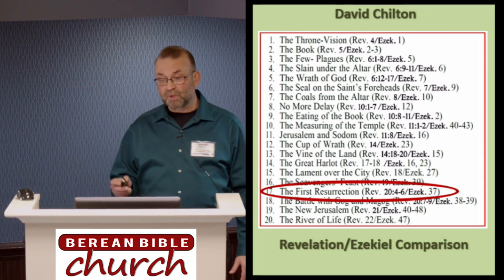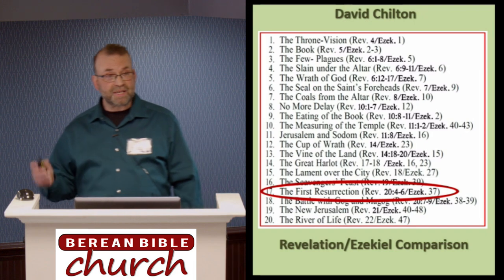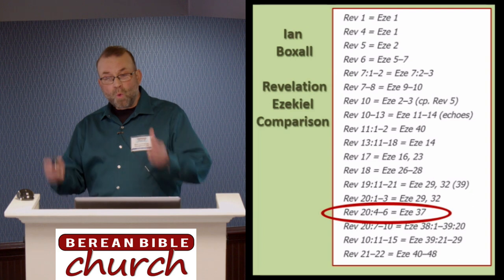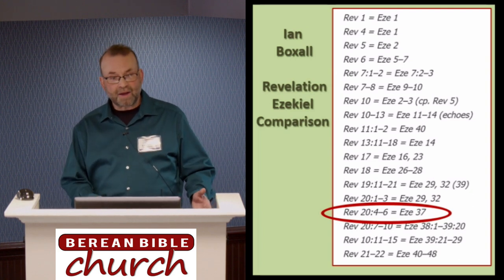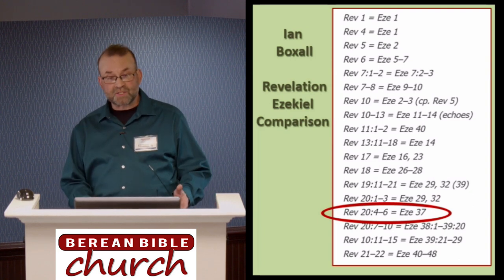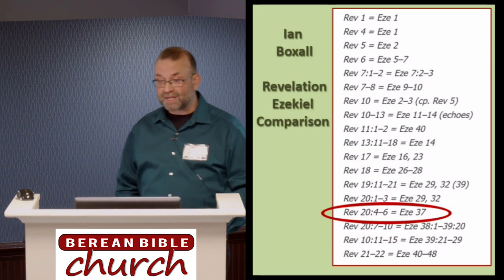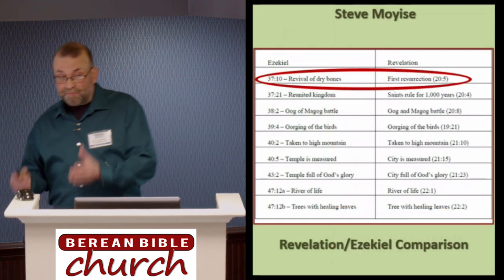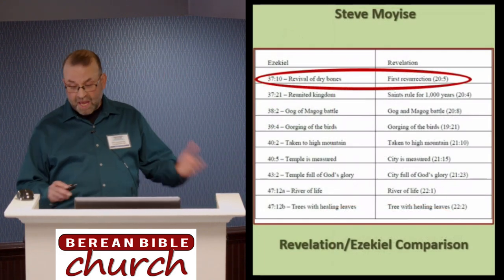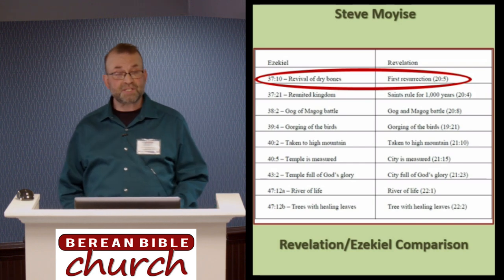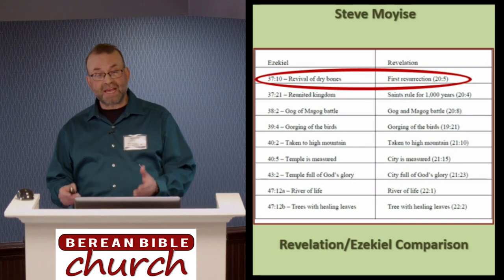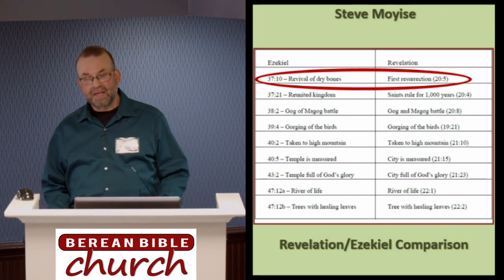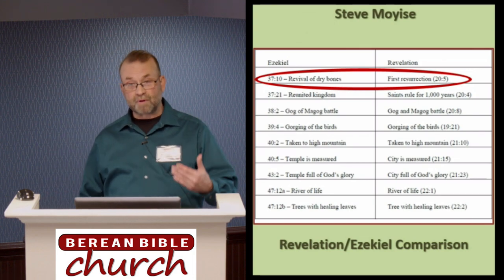And notice where Ezekiel 37 falls in Chilton's chart — it falls right in line with Revelation 20:4-6. Ian Boxall has a similar table demonstrating Ezekiel's influence on the book of Revelation. Again, where does Ezekiel 37 line up? Boxall puts it this way: Revelation 20:4-6 equals Ezekiel 37. Focusing on the final sequence of visions in both prophets, Steve Moyes has a chart showing that Ezekiel's Valley of Dry Bones lines up with the first resurrection of Revelation 20.